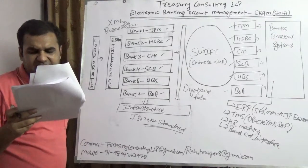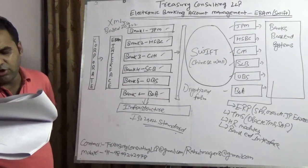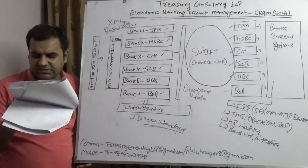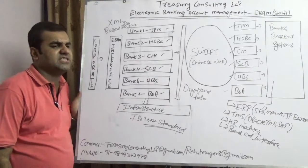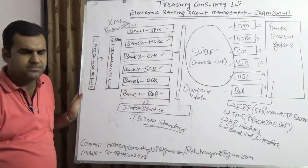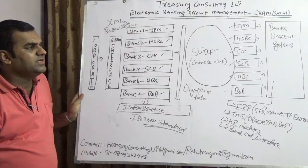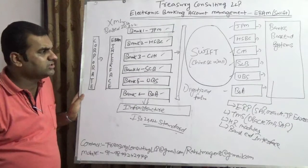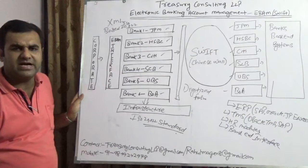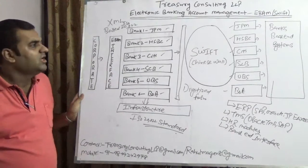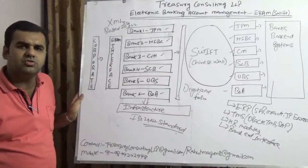Last but not least, you will get the additional benefits of SWIFT connectivity, where SWIFT will offer you a lot of additional treasury services. At the end, this is a small demonstration for all corporate treasurers: if they are following current and orthodox practices of paper-based bank account management — that is BAM — then please switch to EBAM. I request you to go to SWIFT and buy this framework. It's not very costly, and you are going to get a lot of benefits versus what you have right now.